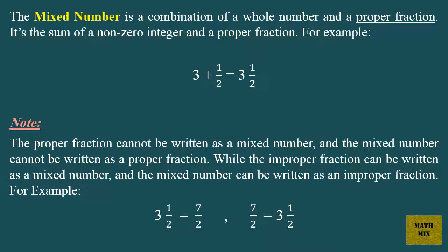A mixed number is a combination of a whole number and a proper fraction. It's the sum of a non-zero integer and a proper fraction. For example, 3 plus 1 over 2 equals 3 and one half. Note: a proper fraction cannot be written as a mixed number, and a mixed number cannot be written as a proper fraction. While an improper fraction can be written as a mixed number, and a mixed number can be written as an improper fraction. For example, 3 and one half equals 7 over 2, and 7 over 2 equals 3 and one half.